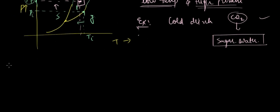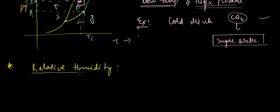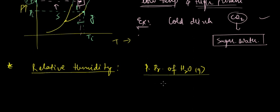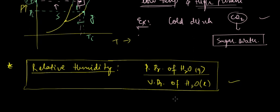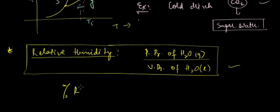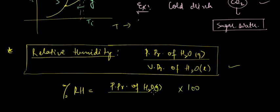Now let's discuss relative humidity. Relative humidity is defined as the partial pressure of H2O(g) divided by the vapor pressure of H2O(l). The percentage relative humidity is calculated by multiplying the partial pressure of H2O(g) by 100 and dividing by the vapor pressure of H2O(l). With this we come to the end of this lecture. In the next lecture we'll be talking about the states of matter and then the gaseous state. Good luck and goodbye.